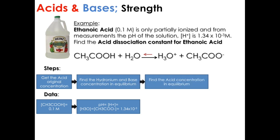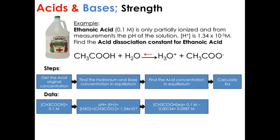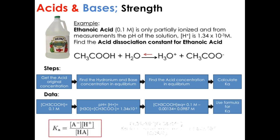Then, find the acid concentration in equilibrium. The acid concentration in equilibrium is the original 0.1 molar minus one of the concentrations of the products, that is 0.00134, giving us the concentration of the acid in equilibrium. Finally, calculate Ka using the formula: multiply the concentration of both products in equilibrium and divide by the concentration of the acid in equilibrium. This gives us the Ka value.